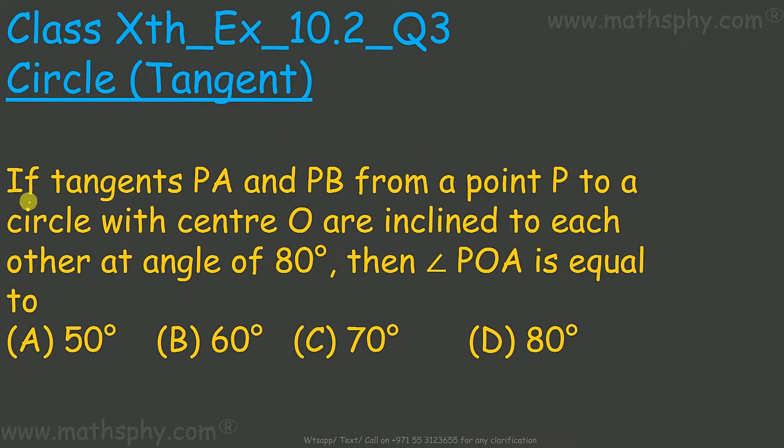This question here, it says if tangents PA and PB from a point P to a circle with center O are inclined to each other at an angle of 80 degrees, then angle POA is equal to what?